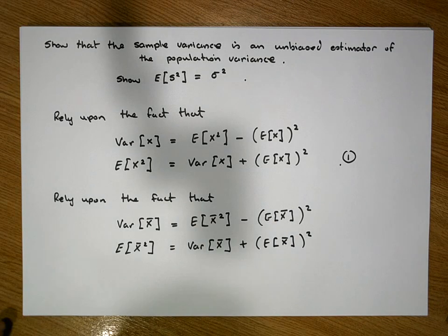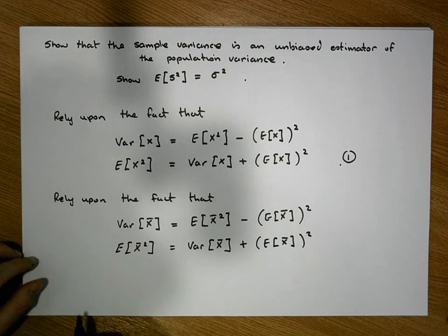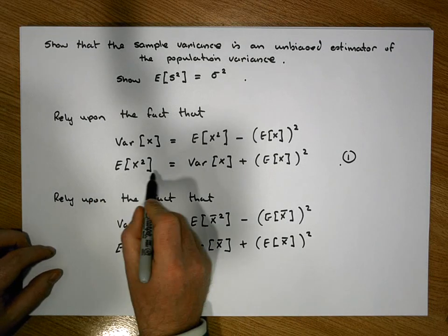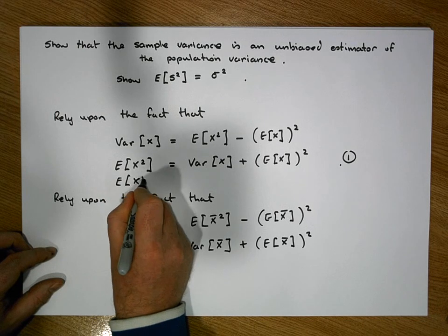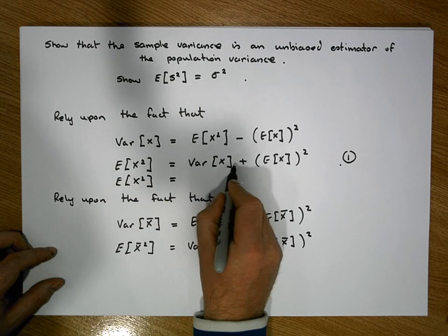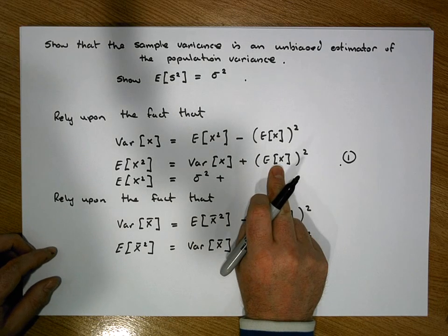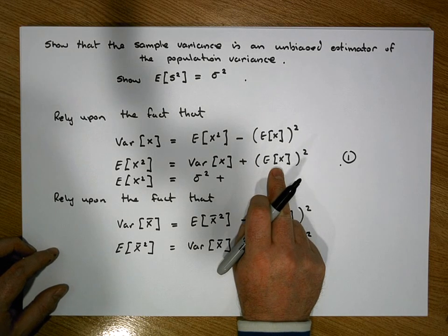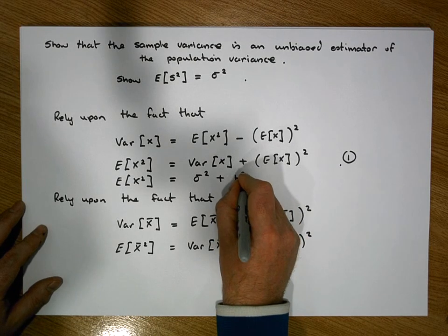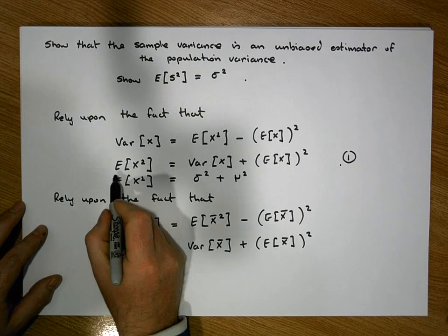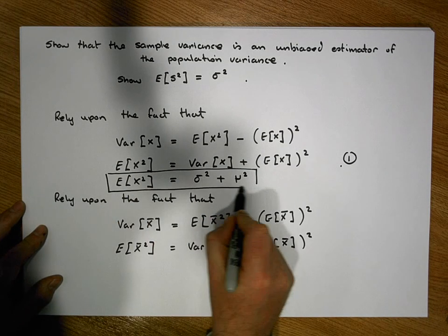So what do these two things tell us? Going back to the first identity, the expected value of X squared equals the variance of X, which is sigma squared, plus the square of the expectation of X. Now the expectation of X is simply equal to the population mean, so it's plus mu squared. That's our first important identity that we'll require later on.